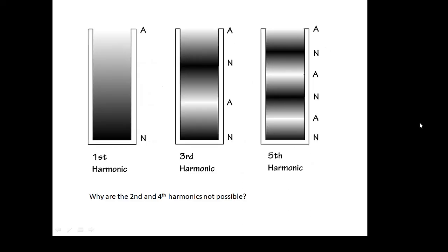Looking at this diagram, there's our first harmonic — our fundamental — with a node at the closed end and an anti-node at the open end. We can't get the second harmonic, because that would mean a node at the open end, and that's not allowed. An open end has to be an anti-node. So we don't get the second harmonic; we get the third harmonic, which is three times the fundamental frequency. We don't get the fourth harmonic; we do get the fifth. So if the tube is closed at one end, we just get odd harmonics: first, third, fifth, etc.